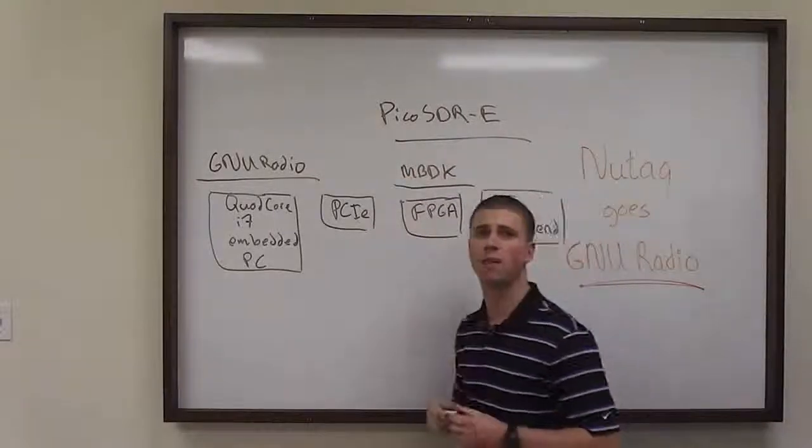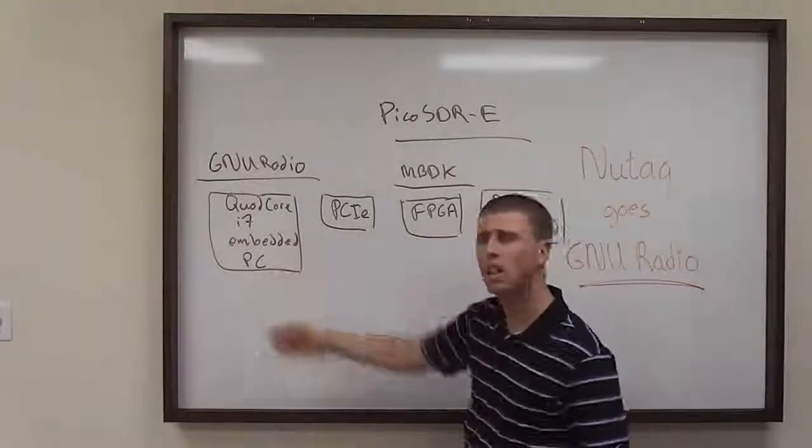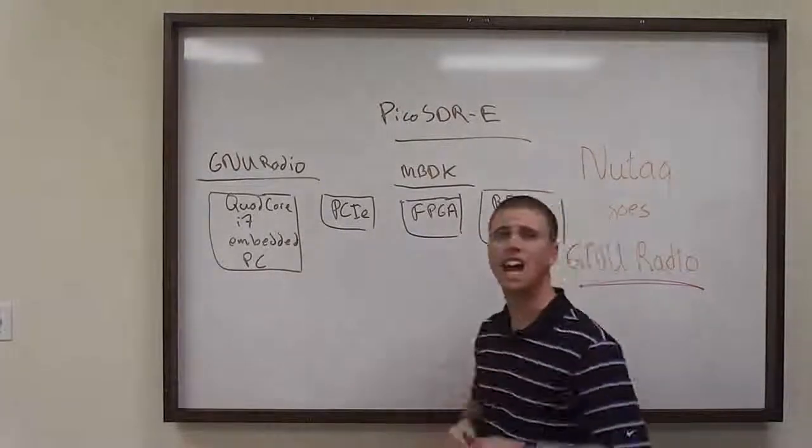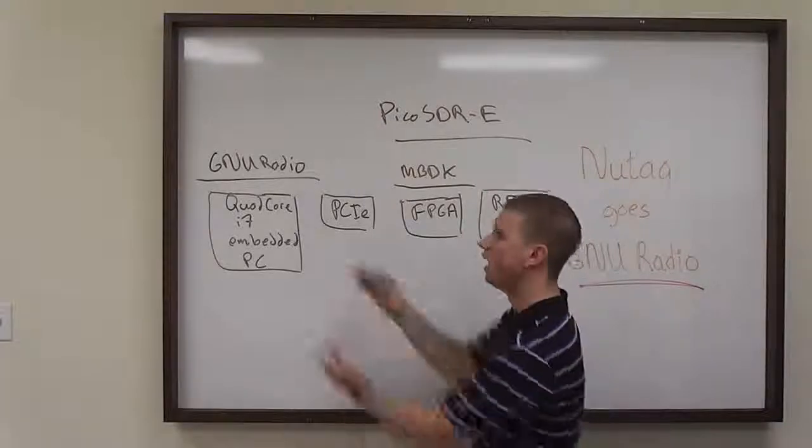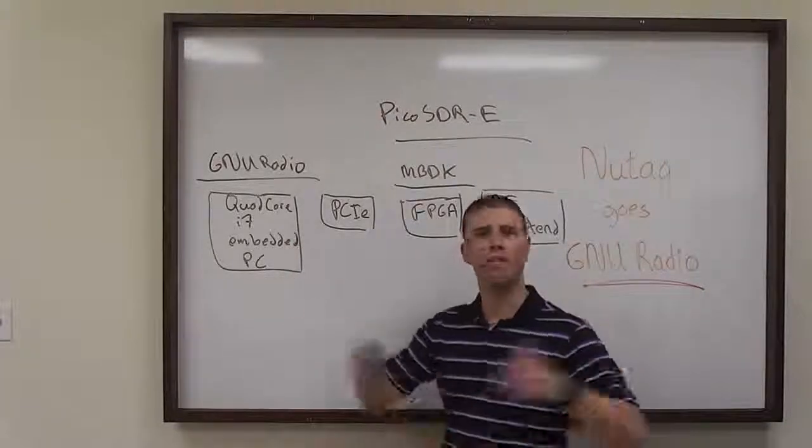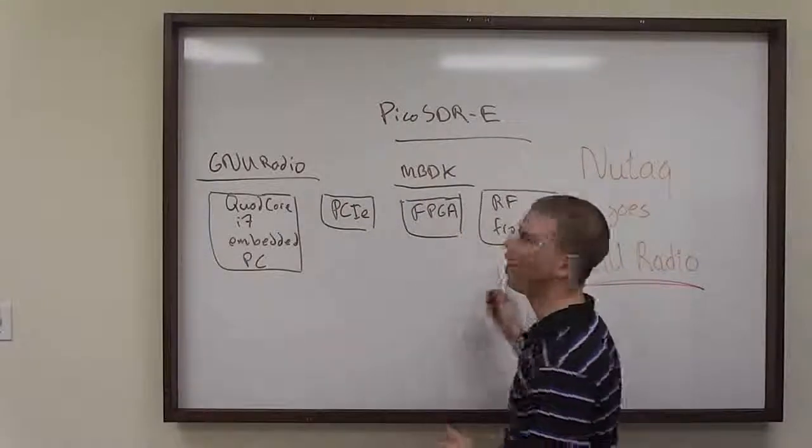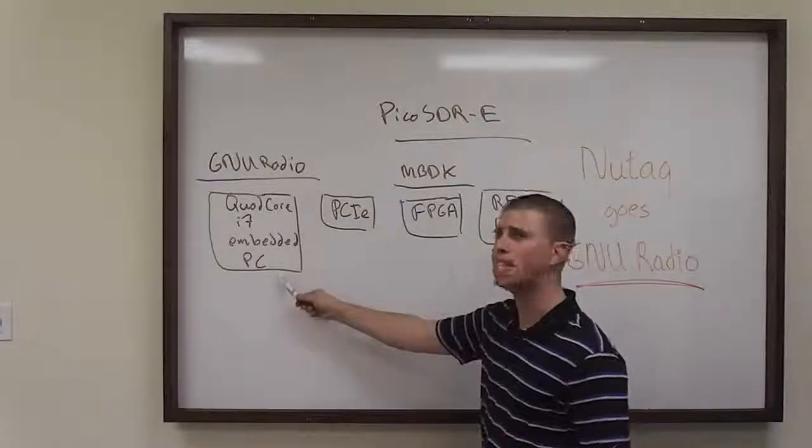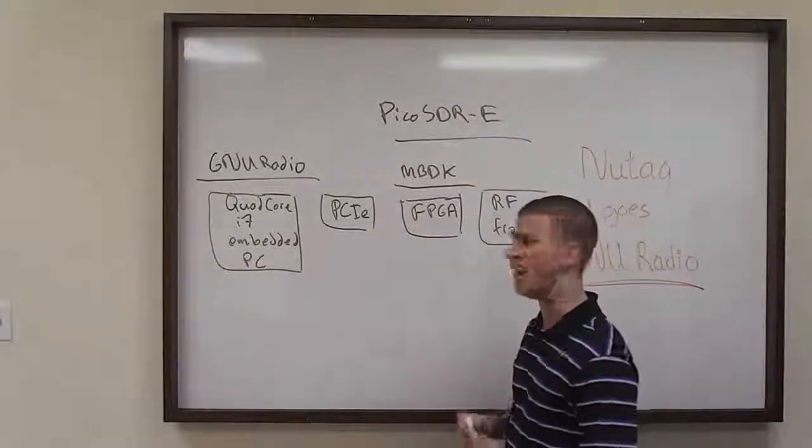To help you benefit from the best of both worlds, we provide a PCI Express Link between the PC and the FPGA to allow you to stream in full bandwidth your RF signals from the PC to the FPGA that drives the RF front end.